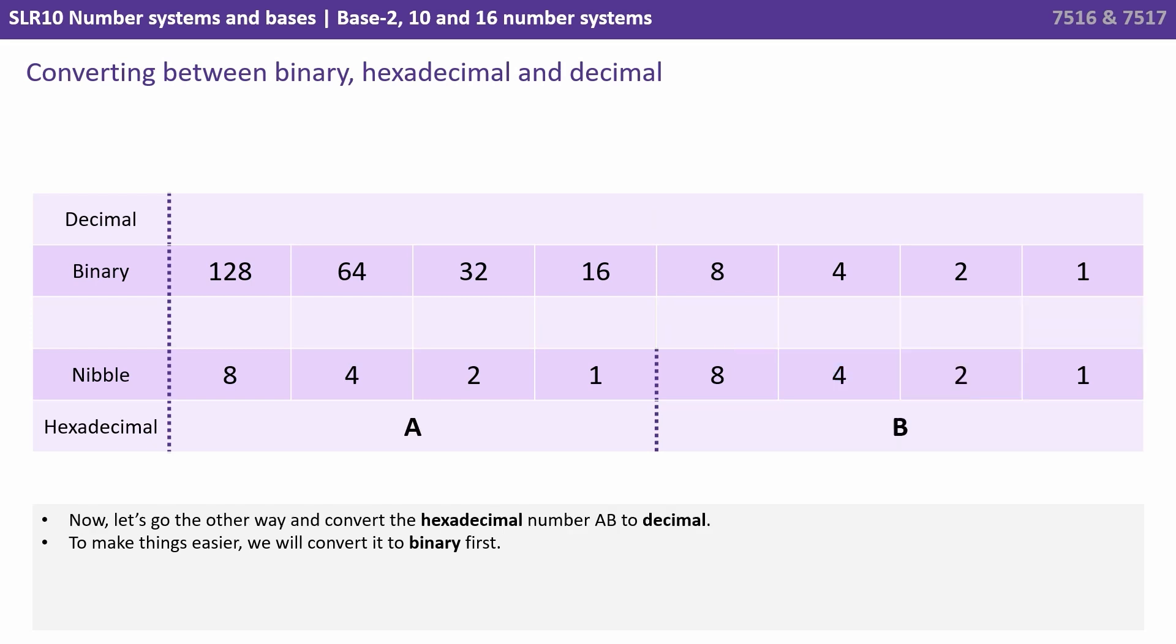Okay, let's try going back the other way now. We'll present you with a base 16 hexadecimal number, and you're going to convert it all the way back to base 10 decimal. And again, to make it easier, we'll go through binary first. So the hexadecimal number we've got is AB. We'll split it into the two components. We'll start with A. Now remember that can be represented by four binary digits, a nibble. So A in hexadecimal is 10 in decimal. So that would be a 1 in the 8 column, 0 fours, 1 in the 2 column, and 0 ones. 8 plus 2 is 10. So that's 1, 0, 1, 0.